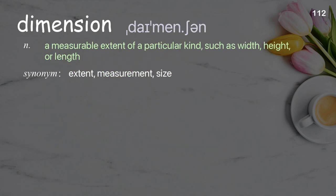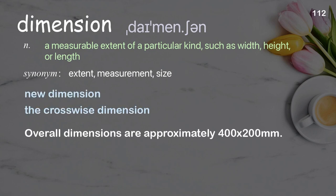Dimension: a measurable extent of a particular kind, such as width, height, or length. Examples: new dimension, the crosswise dimension. Overall dimensions are approximately 400 by 200 millimeters.